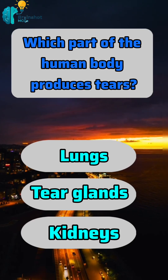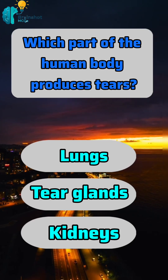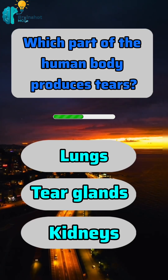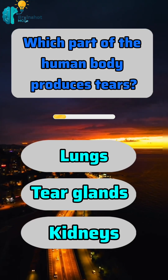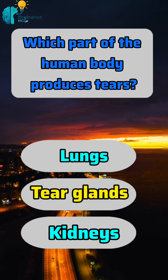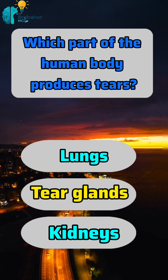Which part of the human body produces tears? Correct answer: B. Tear glands.